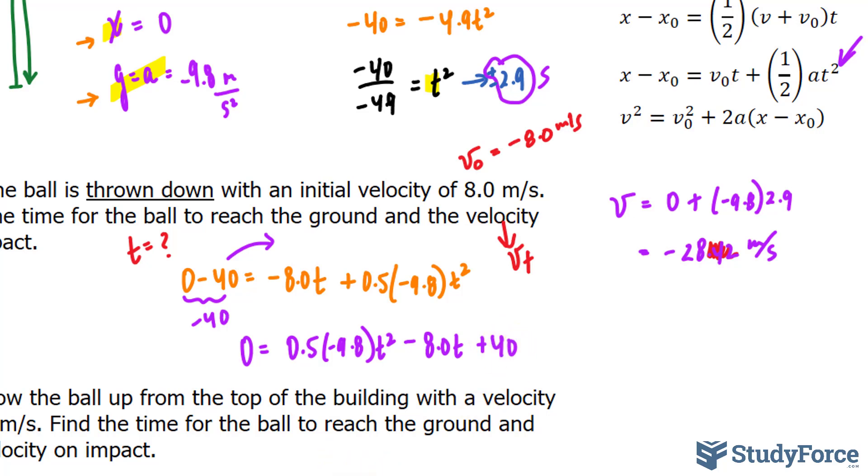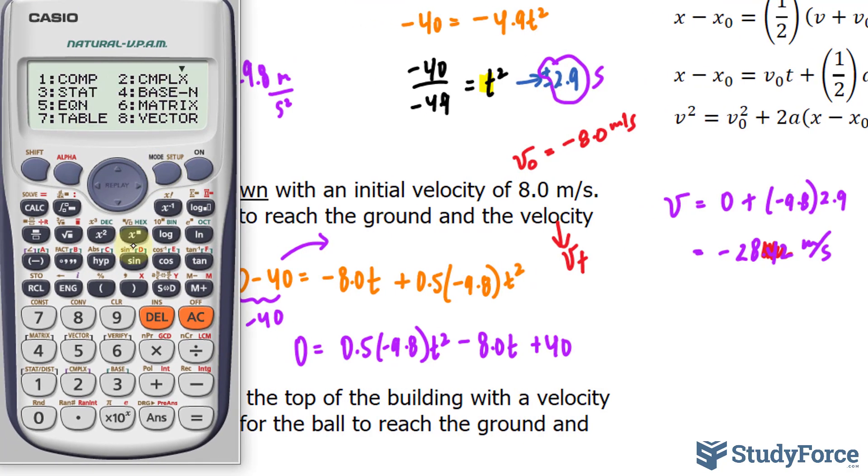So now we go into our calculator. I have the quadratic formula on my calculator, so it can do it right away for me. But you can use the quadratic formula by hand and you'll still get the same answer. So 0.5 times negative 9.8, that's the a term. See the x squared term or the t squared term in this case. Negative 8.0 and positive 40.